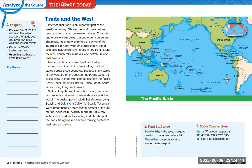Mexico and Canada are significant trading partners with the states in the west. Many western states border these countries. Because many states in the west are on the coast of the Pacific Ocean, it is also easy to trade with companies from the Pacific Basin — these countries include China, Japan, South Korea, Hong Kong, and Taiwan. States along the west have many ports that both receive and send container ships around the world. The busiest ports include Los Angeles, Long Beach, and Oakland in California. Seattle, Tacoma, and Washington handles more than five percent of the US market. Anchorage, Alaska connects frequently with markets in Asia. Expanding trade has helped the port cities grow and become thriving centers of business and culture.